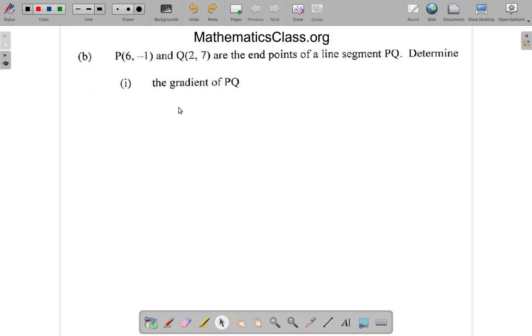You do have a formula that you could use to get the gradient of PQ. The gradient is equal to y2 minus y1 over x2 minus x1. Consider P as point 1 with x1, y1 and Q as point 2 with x2, y2 and substitute them. I want you to pause the video, try that and see what you get for the gradient.